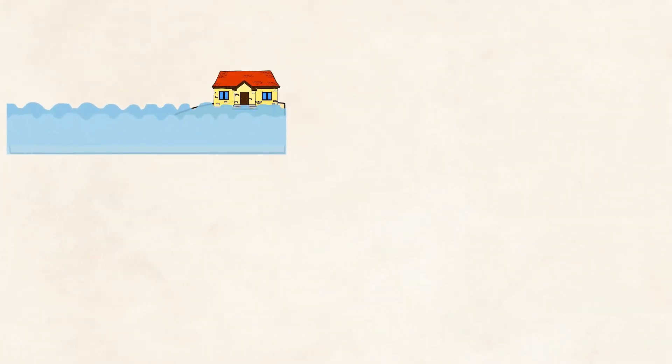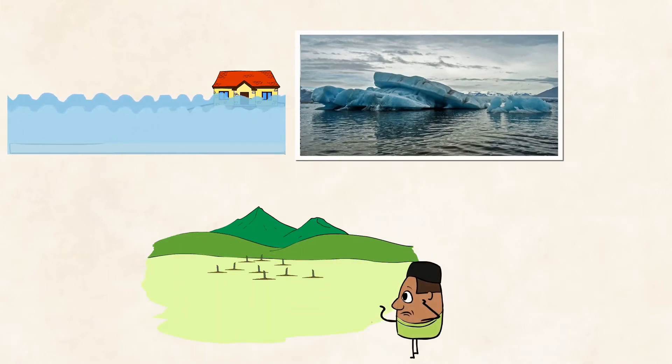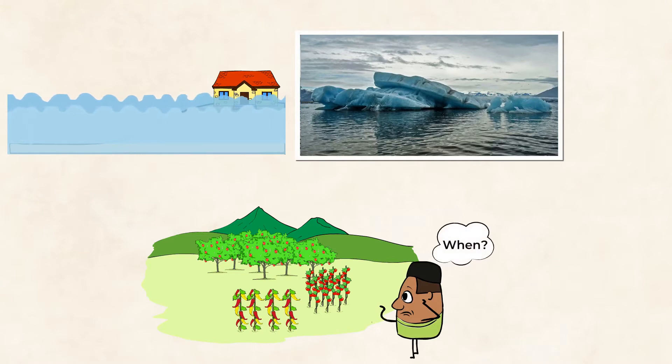Sea levels are rising. Glaciers are shrinking. Ice is melting in Antarctica quicker than before. And crops are ripening at different times, making it unreliable for farmers to provide us with food.